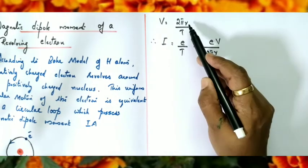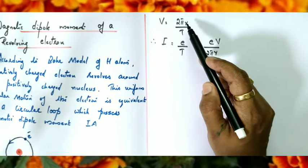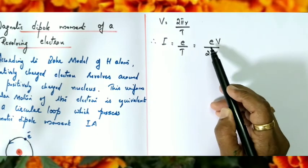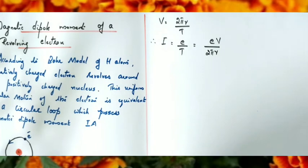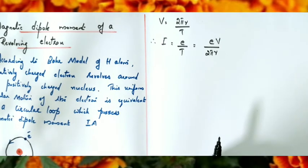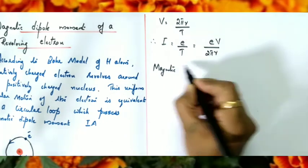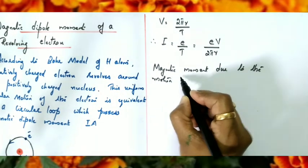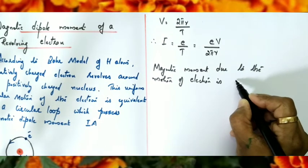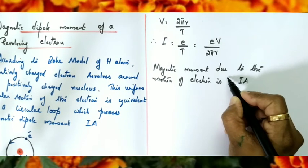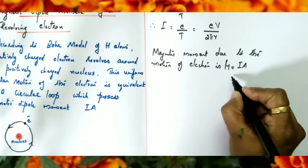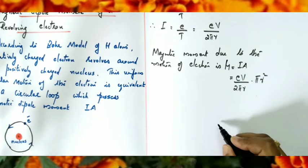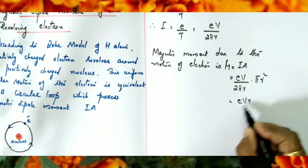The motion of the electron constitutes a current I = e/T where T is the time period of revolution. The orbital speed v equals 2πr/T, so the current becomes I = ev/2πr. The magnetic moment due to orbital motion is μ = IA = (ev/2πr)·πr² = evr/2.